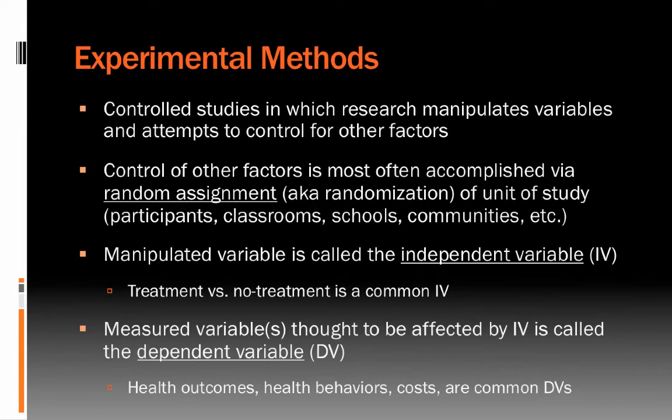The main hallmark for most research methods is the experimental method. The experimental method involves controlled studies in which the researcher manipulates variables and attempts to control for other factors. In experimental research designs, you're trying to isolate the inference you can gain from the research question and eliminate as many other possible explanations as possible, often by controlling for other variables that may influence the question.